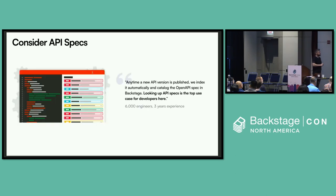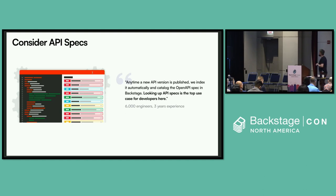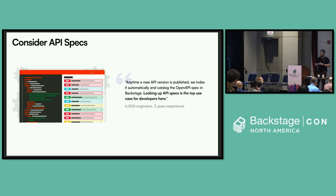API specs can also be quite successful. The best example is Zalando — they've publicly said they have 43% daily active usage of Backstage, and one of the key use cases is engineers looking up API specs. Your API specs won't magically appear just because you've deployed Backstage — you have to invest in collecting them, putting them in Backstage, making them versioned and searchable. Zalando built a pipeline for introspecting their services and producing API specs, pushing them into Backstage where they're versioned and searchable. We're doing similar things in Rodee.